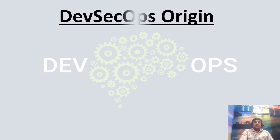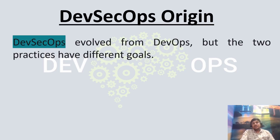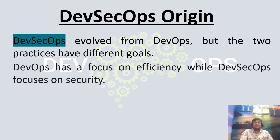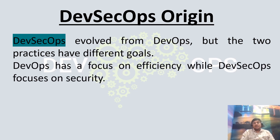DevSecOps originated with DevOps, but both topics have different goals. As you can guess from the name itself, DevSecOps includes security with DevOps. DevOps is development plus operations. DevOps has a focus on efficiency, while DevSecOps focuses on security.